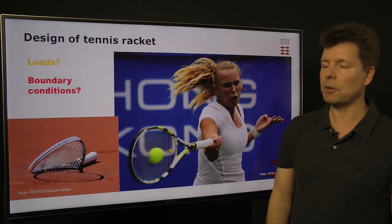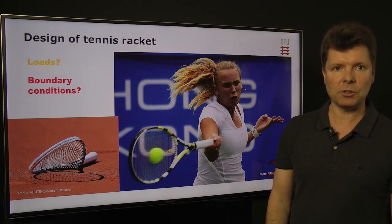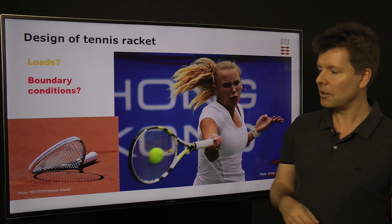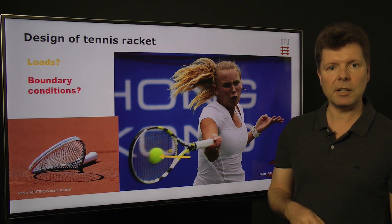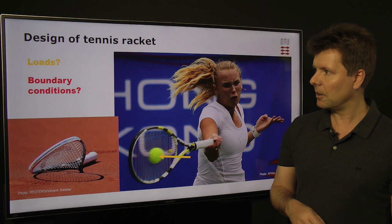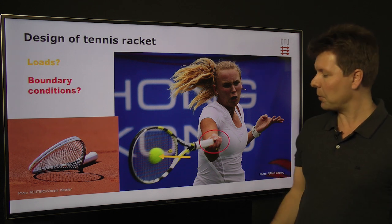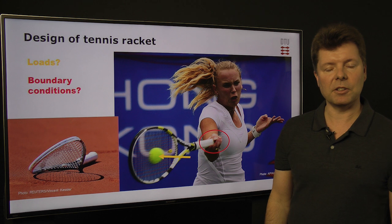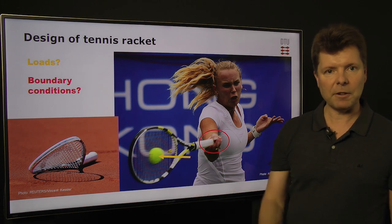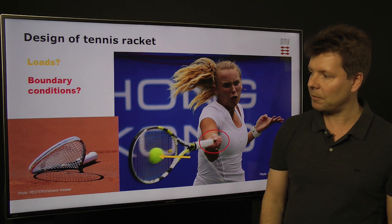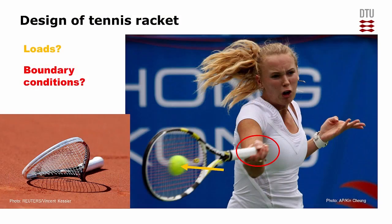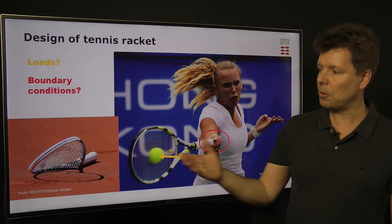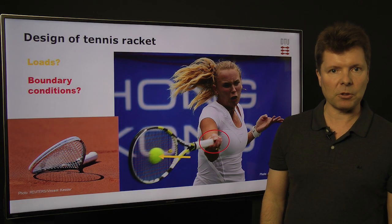Here are a few examples of simple structures. Consider a tennis racket — what are the loads? The loads come from the ball hitting the strings in the racket, and the boundary condition comes from the player's grip on the racket. But it can fail, and in this case it failed because a frustrated player hit the racket to the ground. This is an important lesson, because often structural failure is caused by loads that the structure was not designed for.